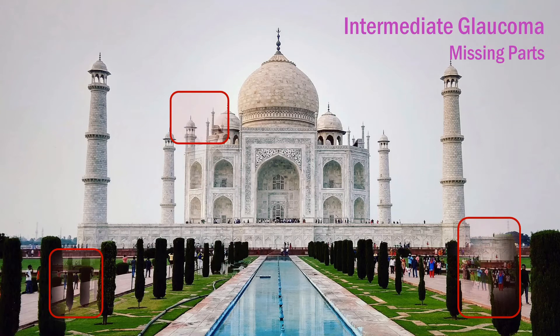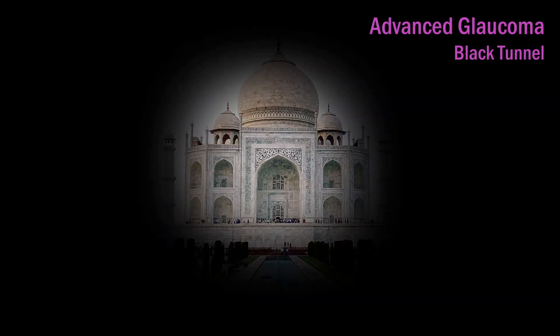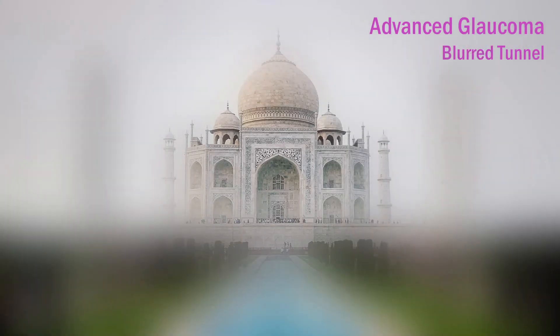In advanced glaucoma, the remaining vision may be a black tunnel as seen in this image, or it may be a blurred tunnel as seen in this next image. In the end stage of glaucoma, one may face complete blindness.